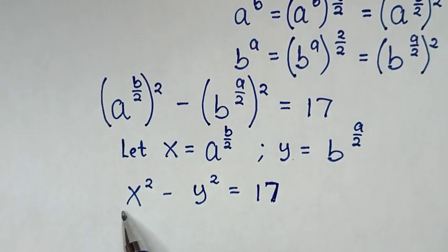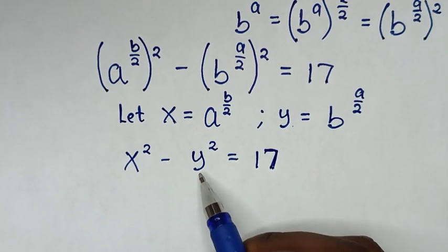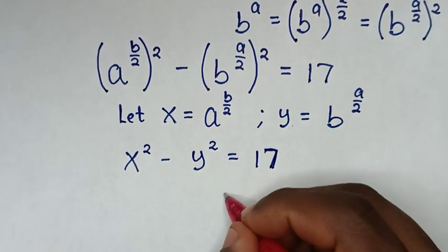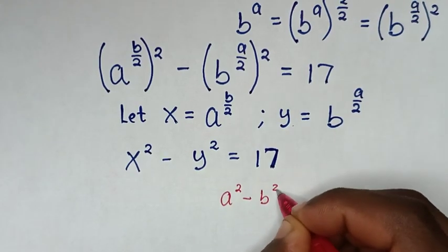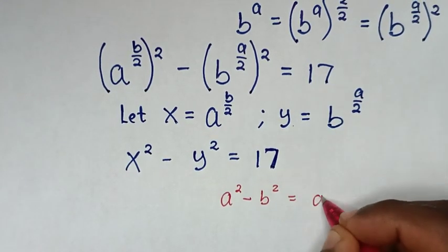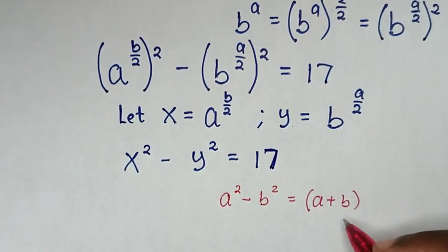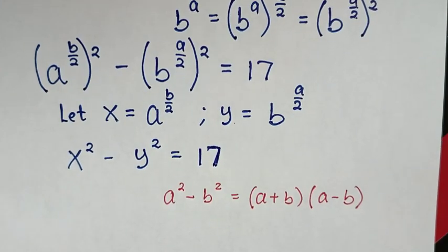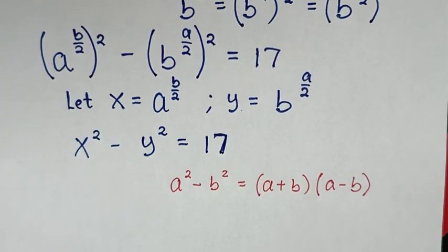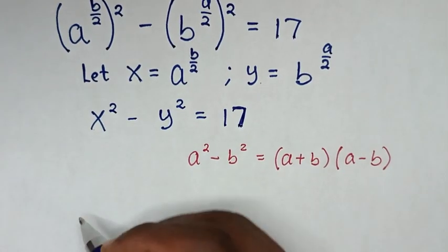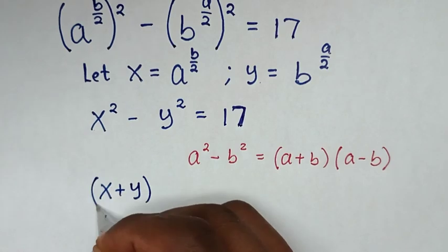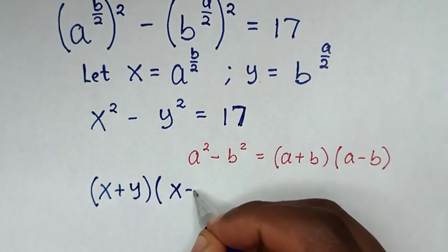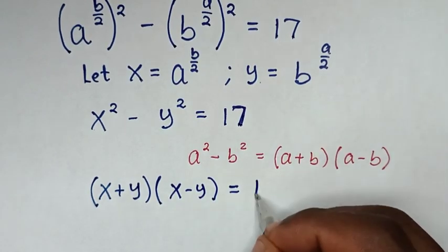From here, x squared minus y squared is in the form of a difference of squares. We apply the rule: a squared minus b squared equals a plus b, bracket times bracket a minus b. So it becomes x plus y, bracket times bracket x minus y, bracket equal to 17.